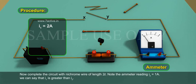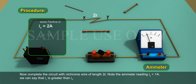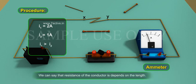Now complete the circuit with nichrome wire of length 2L. Note the ammeter reading. I2 is equal to 1A. We can say that I1 is greater than I2. We can say that resistance of the conductor depends on the length.